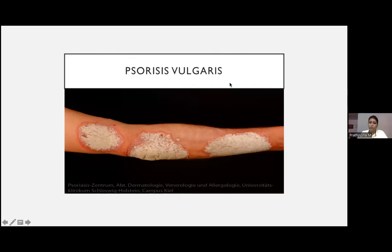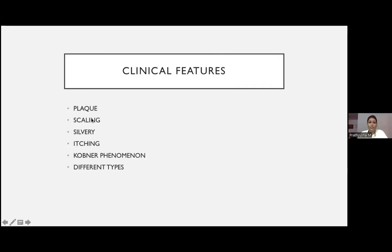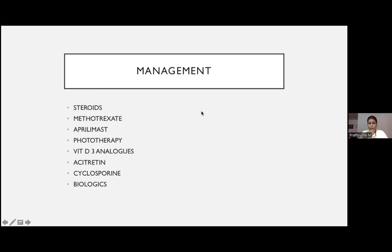Psoriasis vulgaris is characterized by plaques with silvery scaling and itching. New lesions appear at sites of trauma — the Koebner phenomenon. Types include scalp psoriasis, sebopsoriasis, nail psoriasis, chronic plaque, and guttate psoriasis. Management: start topical steroids — not systemic steroids. Systemic steroids are only for exfoliative dermatitis secondary to psoriasis (more than 80% body surface area involved). Other modalities: methotrexate, apremilast, phototherapy, vitamin D3 analogs, acitretin, cyclosporine, and biologicals. Know how to diagnose psoriasis and then refer to the dermatologist.